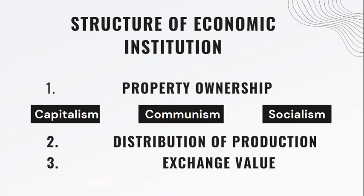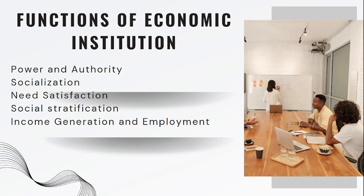The first credit card was introduced in 1946 — it is a kind of exchange in the form of goods and services. Lastly, we have to discuss some of the functions of economic institutions. The first function is power and authority: power is the intentional influence over the beliefs, emotions, and behaviors of people, while authority refers to the formal power to act.